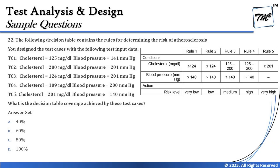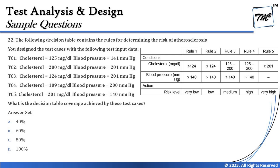Test case five has cholesterol 201 and blood pressure 140. The cholesterol greater than or equal to 201 is covered in rule five, and blood pressure doesn't matter there — there's a hyphen, so nothing to worry about. Test case five goes to rule five. Now, out of the five rules, we have covered only three: rule four, rule two, and rule five.